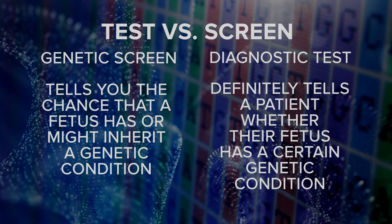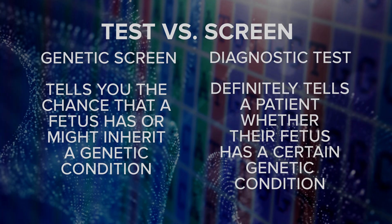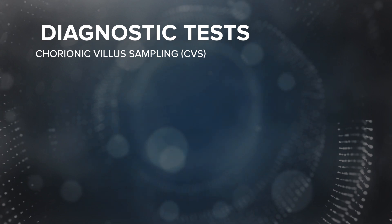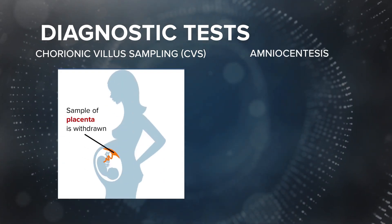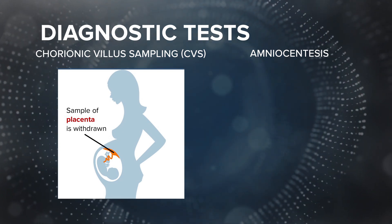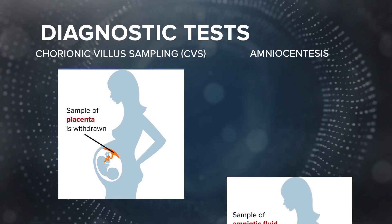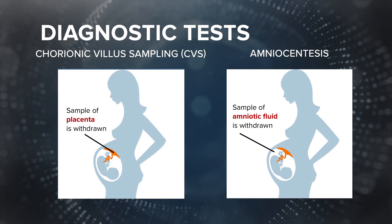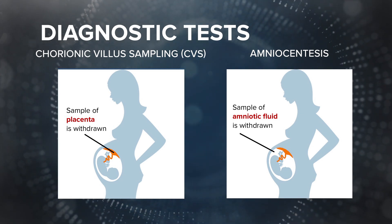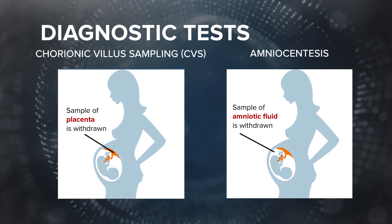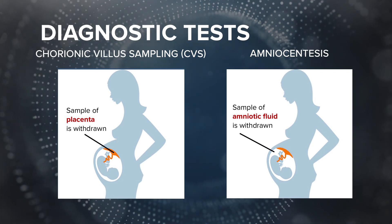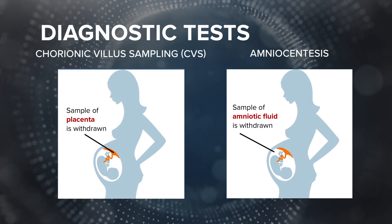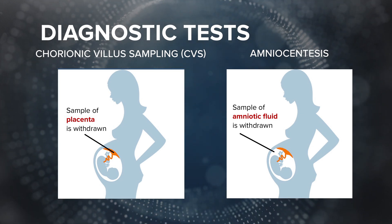Now that we've covered the most common genetic screens, let's take a quick look at some of the most common diagnostic tests available. The two most common methods used today are chorionic villus sampling, or CVS, and amniocentesis. CVS is done by taking a small sample of the placenta that contains cells from the fetus for genetic analysis. During amniocentesis, a tiny amount of fluid is drawn from the protective sac surrounding the developing fetus; this fluid contains microscopic amounts of fetal tissue that can then be analyzed. Both CVS and amniocentesis allow for the analysis of genetic deletions or duplications, specific single gene conditions, and chromosomal conditions.